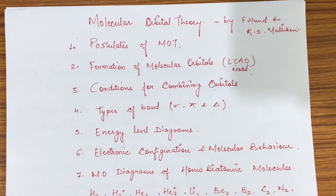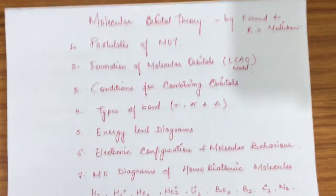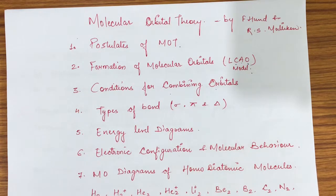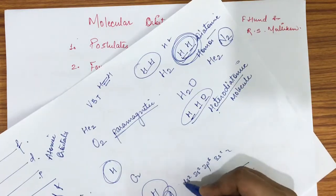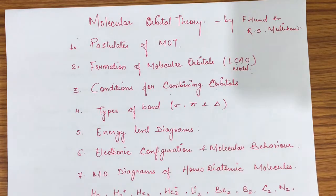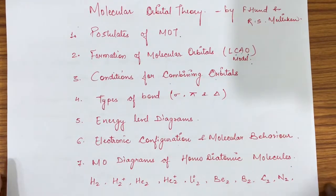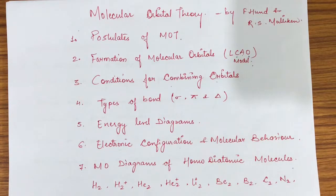Finally, we will learn how to draw MO diagrams for homodiatomic molecules. By then we will know the energy levels, electronic configuration, and how to fill electrons in molecular orbitals — just as we fill electrons in atomic orbitals starting from 1s, then 2s. Similarly, for molecules we fill electrons in molecular orbitals. Different molecules will have different MO diagrams, different energy levels, and different numbers of electrons. We fill them according to their electrons and understand their molecular properties.